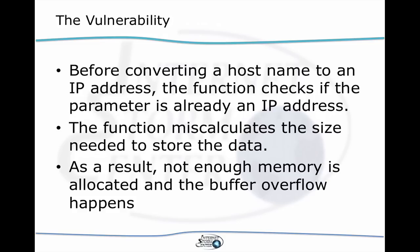So what is this vulnerability about? Before converting a hostname to an IPv4 address, what gethostbyname does is check if what you pass to it is already an IPv4 address. When it does that, the function does not calculate the size of the buffer correctly — it misses the size of one pointer. As a result, it does not reserve enough memory, and you have a small buffer overflow — just the size of that pointer, which is either 4 bytes for 32-bit systems or 8 bytes for 64-bit systems.